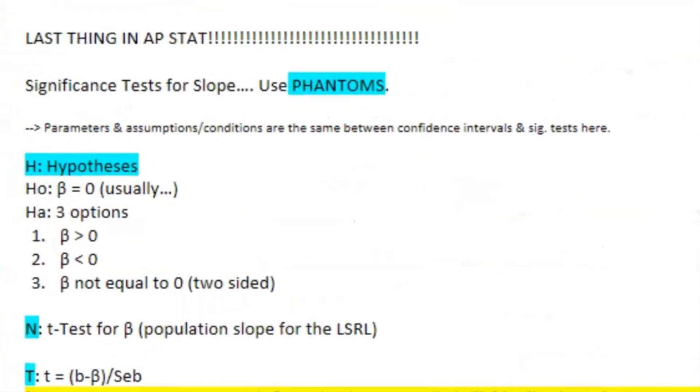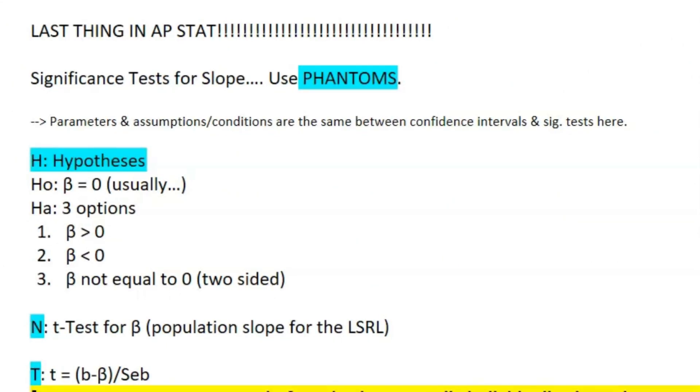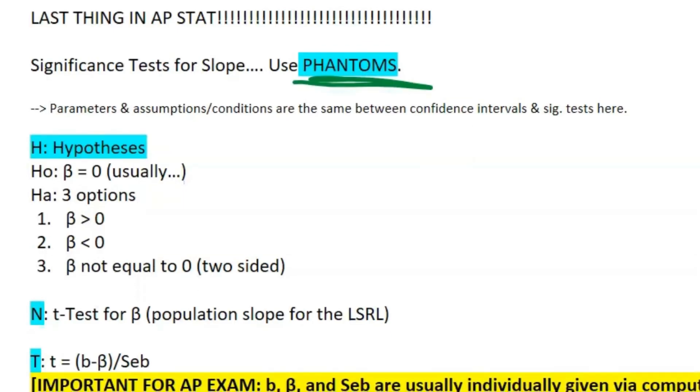Let's move on to the last thing in AP Statistics: it's a significance test for slopes, and we'll be using PHANTOMS just like before. Your parameters and your assumptions and conditions are the exact same as your confidence interval, so if you need to refresh on that, just go back in the video.